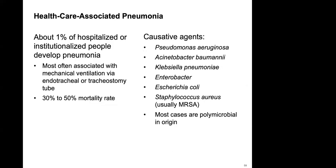Healthcare-associated pneumonia affects about one percent of hospitalized or institutionalized individuals in long-term care facilities. It is most often associated with individuals on a ventilator or with endotracheal or tracheostomy tubes, and it has a 30 to 50 percent mortality rate. Common causative agents include hospital-acquired organisms like MRSA and E. coli.